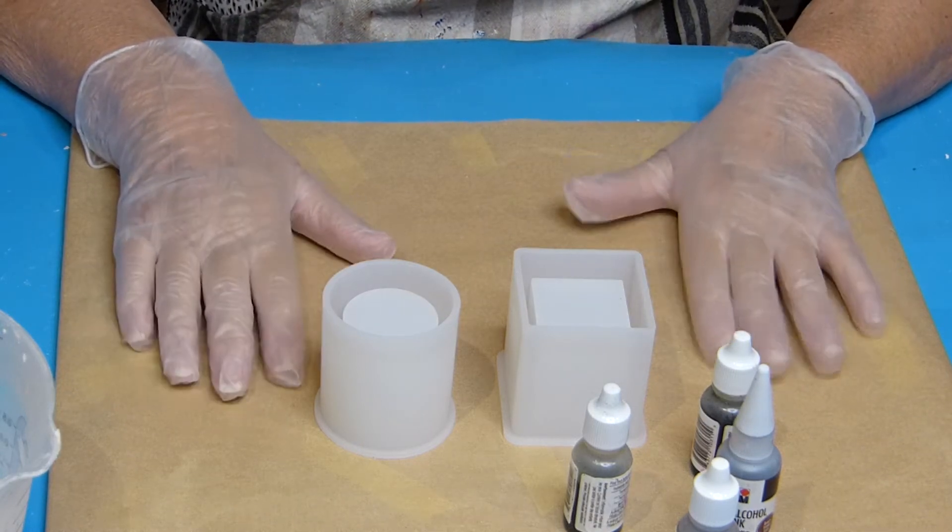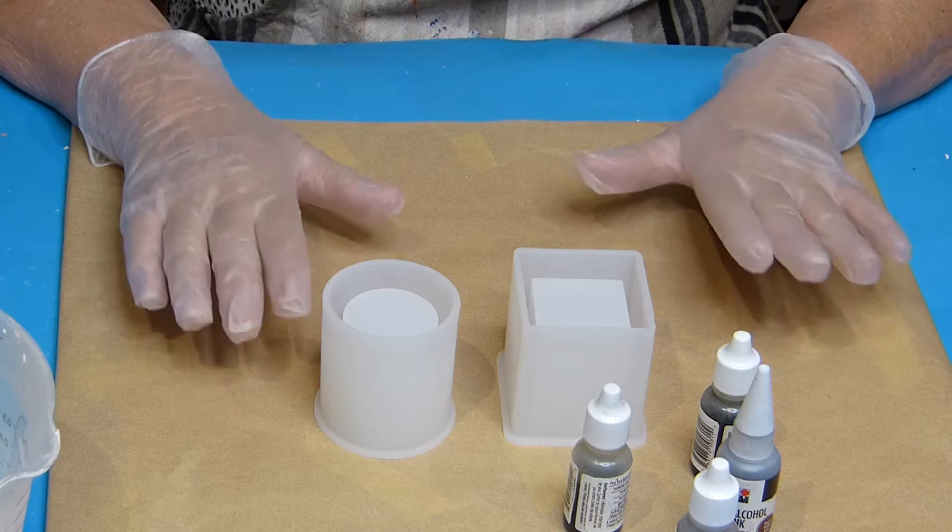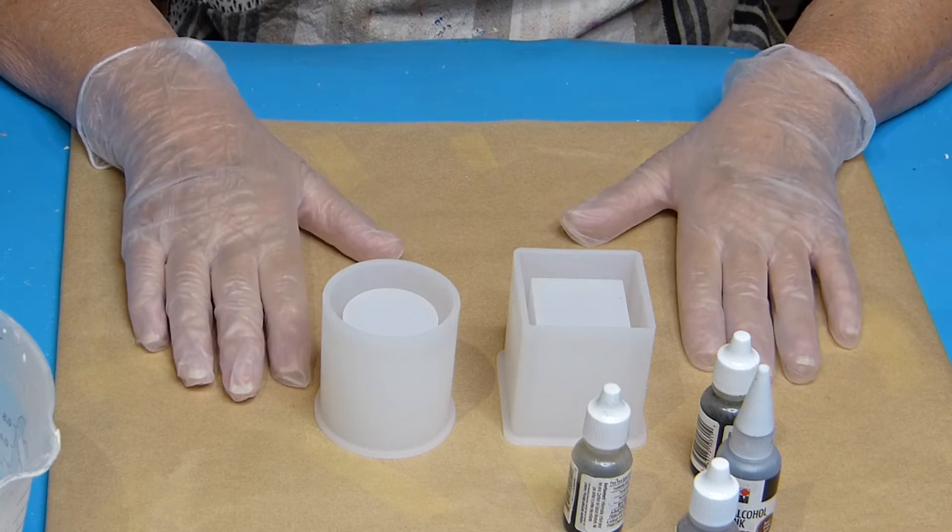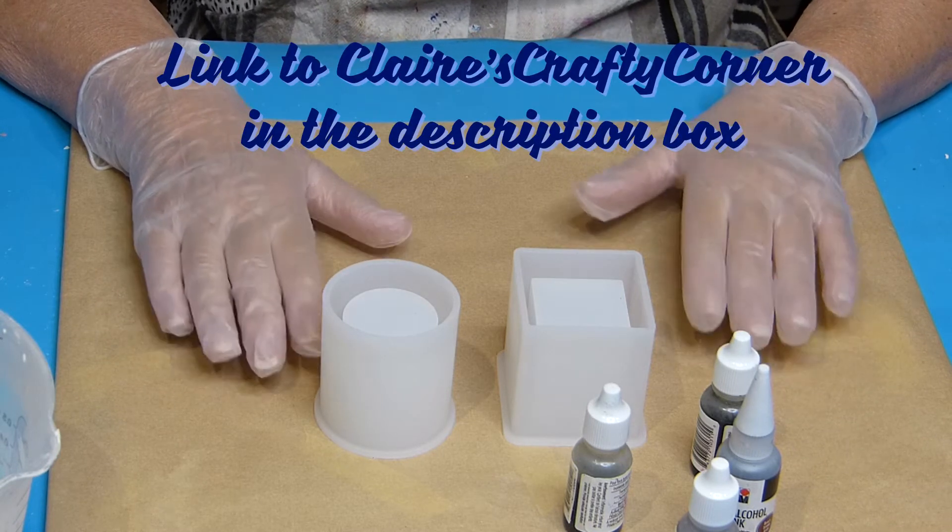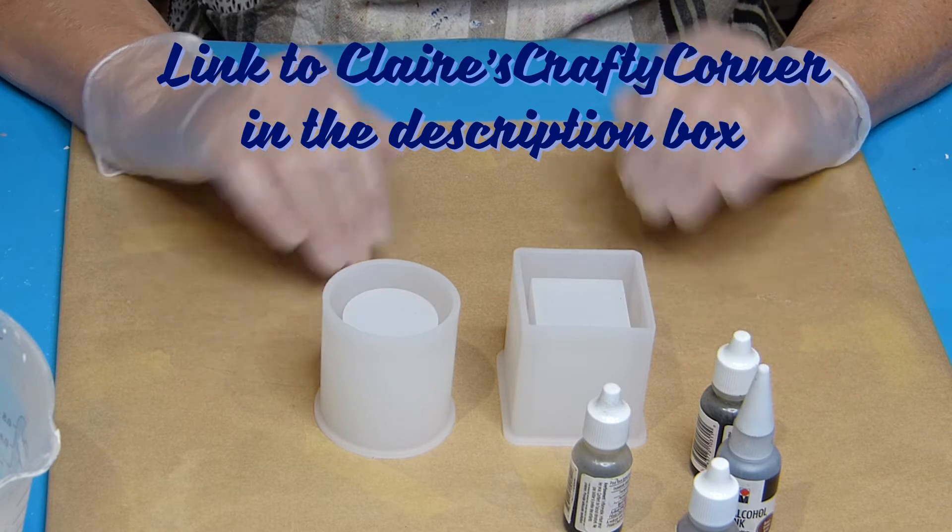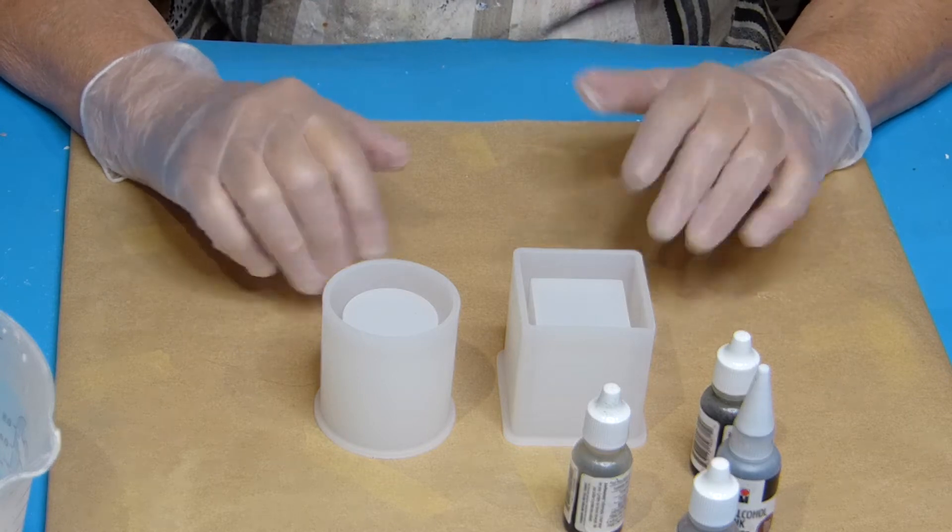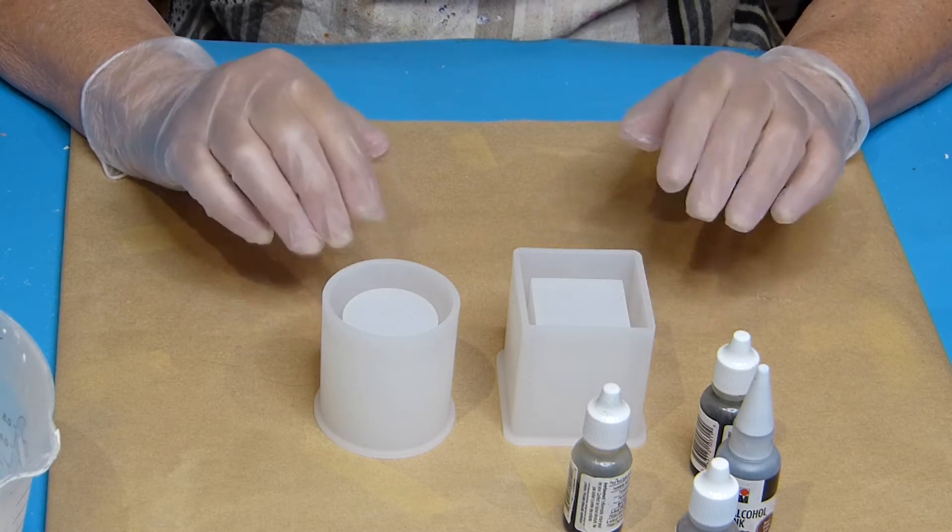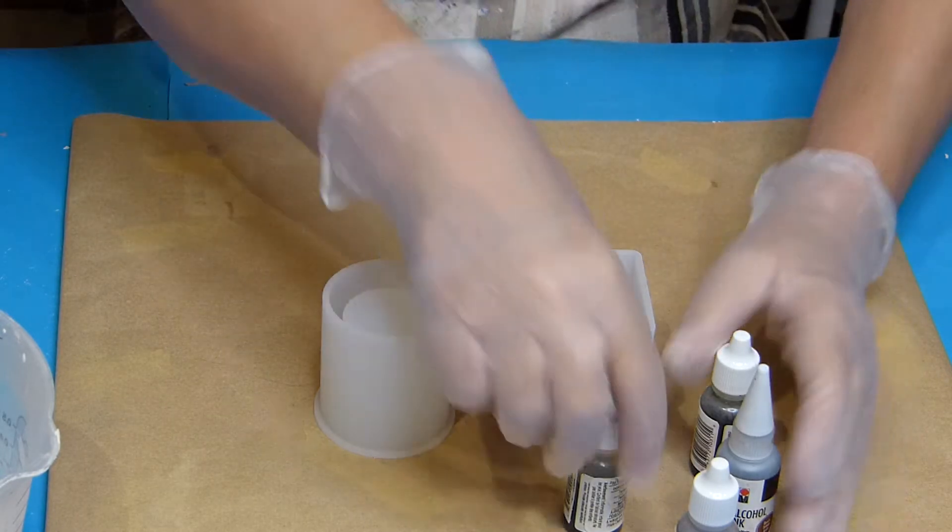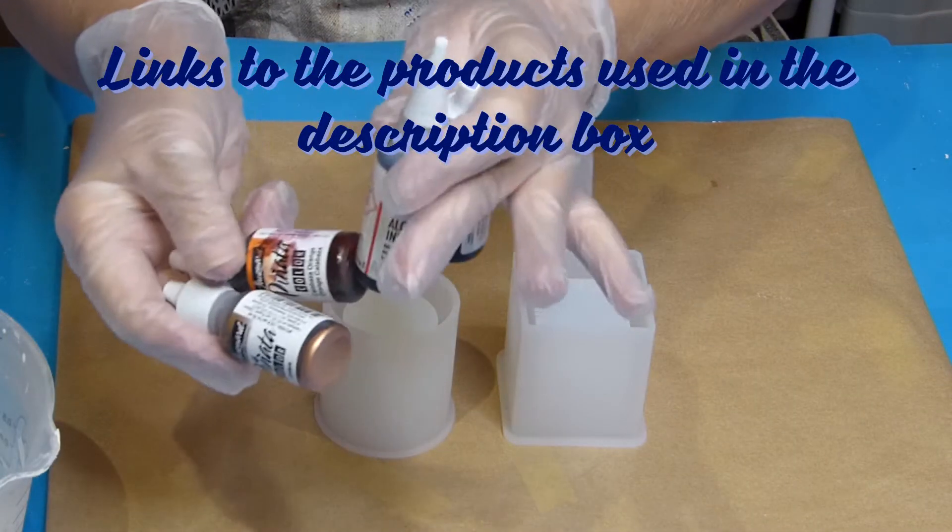I saw it on Claire's channel from Claire's Crafty Corner. She does absolutely amazing experiments with Jesmonite. She tries a lot of things and I learn a lot from watching her. So we are going to use alcohol inks, of course.